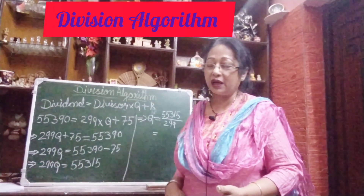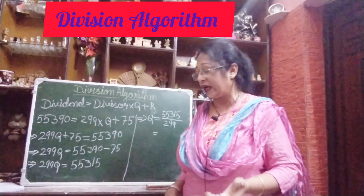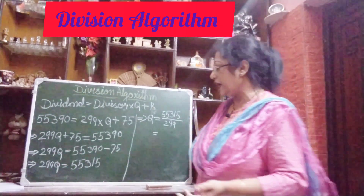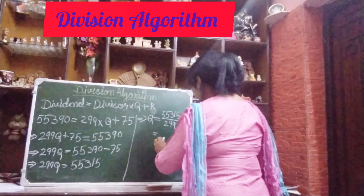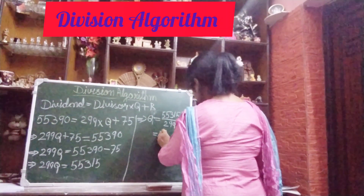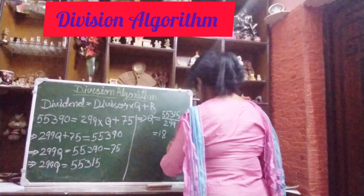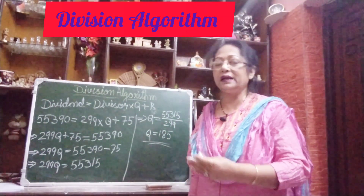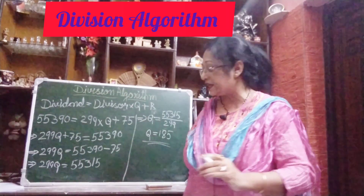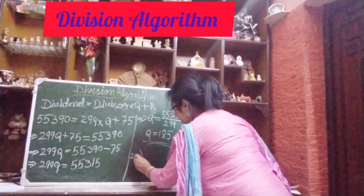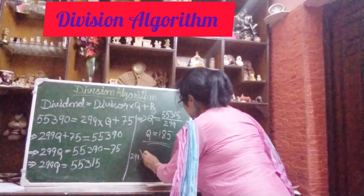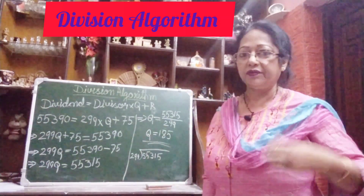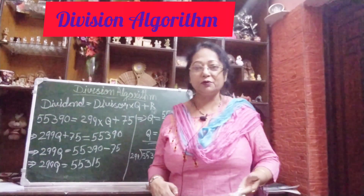If you do the division — I will show you, though all of you can do the division — you divide 55315 by 299, and most probably the quotient will come out to be 185. You can do this long division, and with practice you can also do it orally.